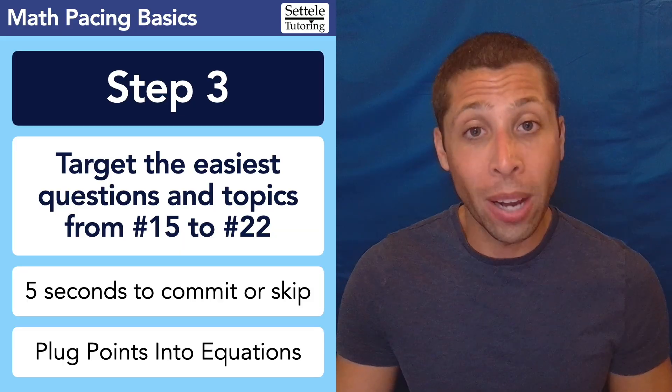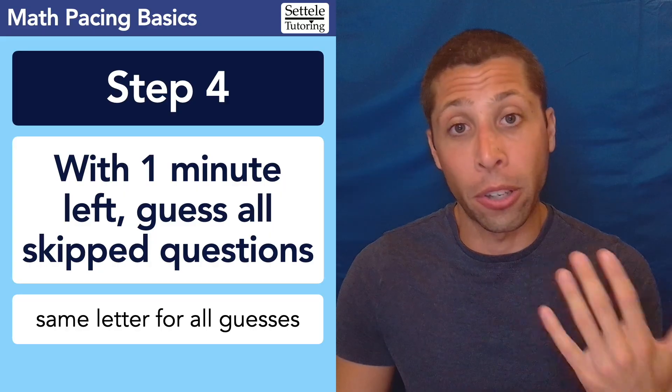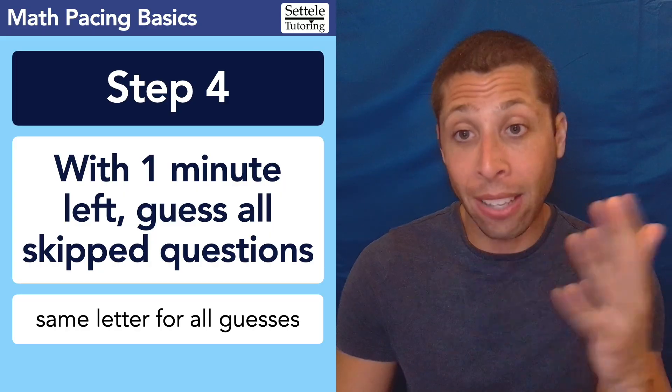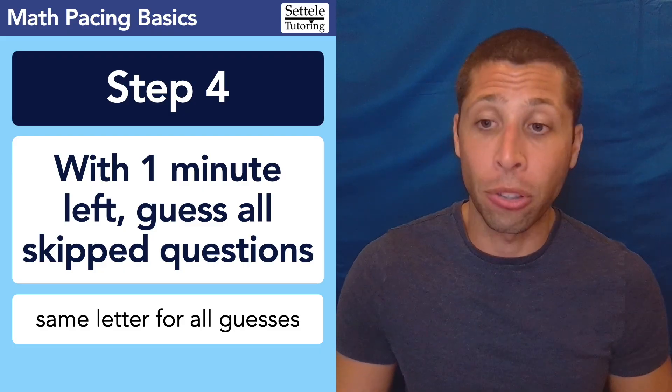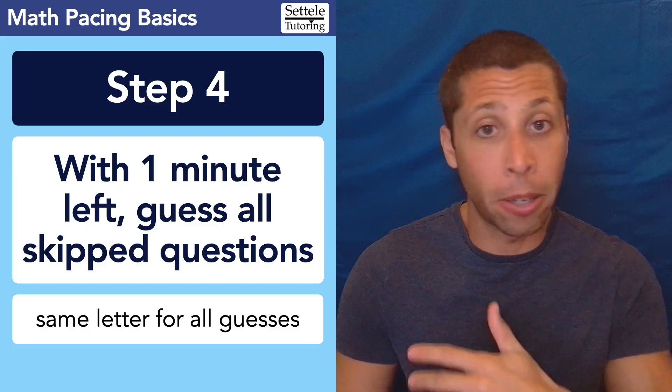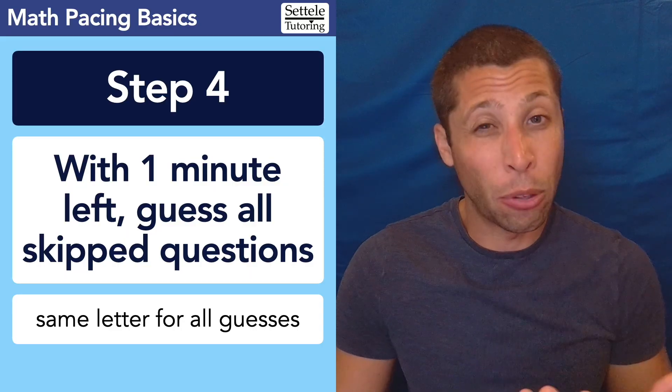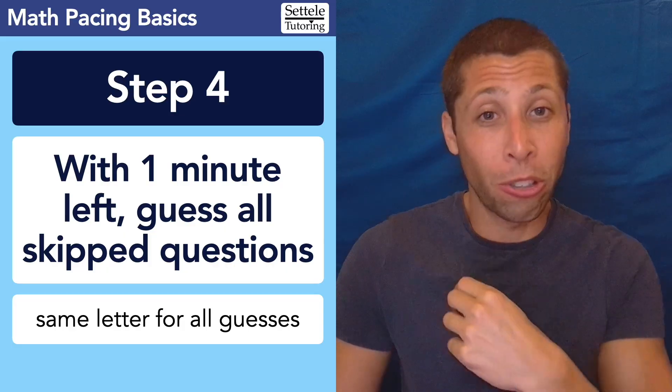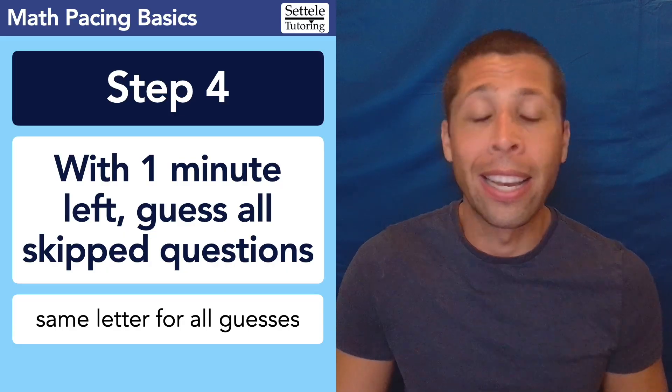So that's why step four is: with one minute left, if you didn't get to all the questions, if there are some blanks, go back and guess randomly on those questions. All the ones that you skipped, make sure you answer something. For the ones that are multiple choice, just guess the same letter. Pick B, pick C, whatever you like. But do that for all the ones you guess on. If it's one of those student-produced response questions without choices, then just pick a number, doesn't matter. Whatever your favorite number is, just put that in. It's better than leaving it blank.